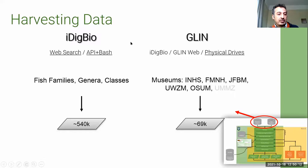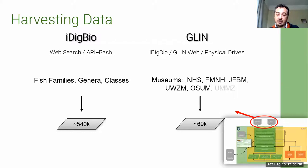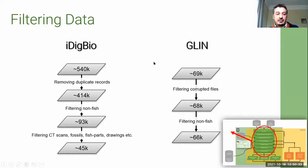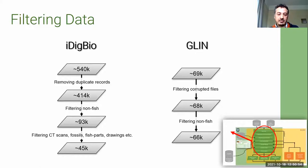For iDigBio, we used a web search and API plus bash — we searched for all fish families, genera, and classes, and got more than 500,000 images. With GLIM we got 69,000 images. We then had to filter iDigBio images because there were many non-fish images, and we had to remove duplicates and filter CT scans, fossil images, partial fishes, drawings, and so on. We ended up with 45,000 usable images. From the GLIM dataset, we removed corrupted files and some non-fish images that museums included, ending up with a usable subset.